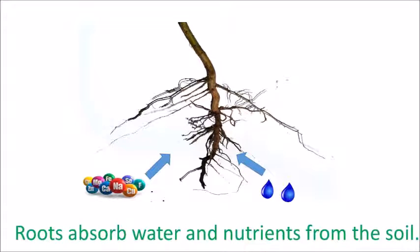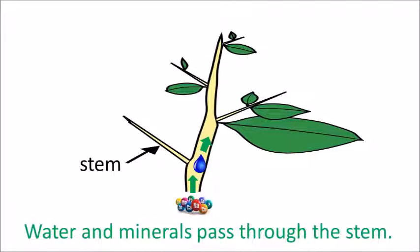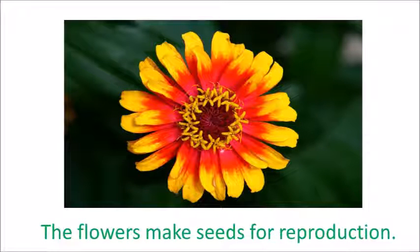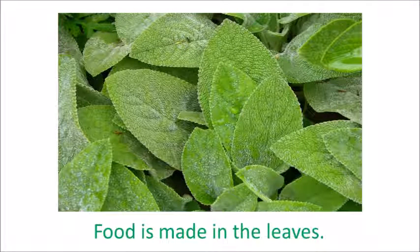The roots absorb water and nutrients from the soil. Water and minerals pass through the stem. The stem holds the plant up. The flower makes seeds for reproduction. Food is made in the leaves.